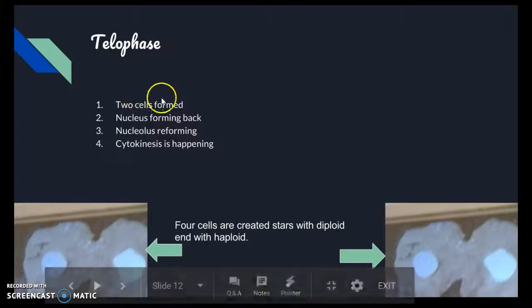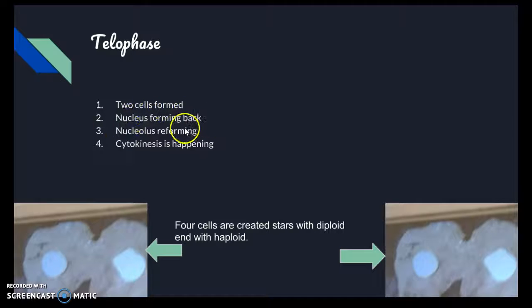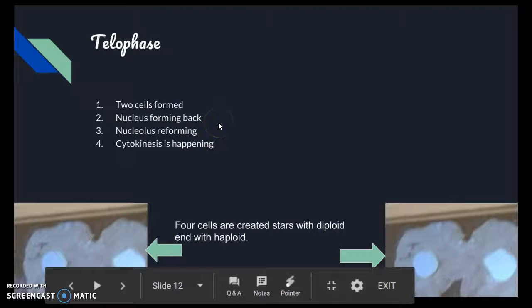Telephase two: two new cells are formed, nucleus is forming, nucleolus is reforming, cytokinesis happens. Four cells are created. These cells started out as diploid cells but end as four haploid cells. In the human body, only one out of these four are viable.